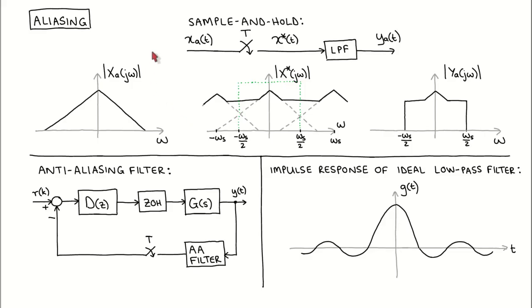Consider the sample and hold circuit shown here, where Xa is the analog input signal, T is the sampling period, X star is the sampled signal, we abstract the zero-order hold circuit with an ideal low-pass filter, and Ya is the resultant output signal.